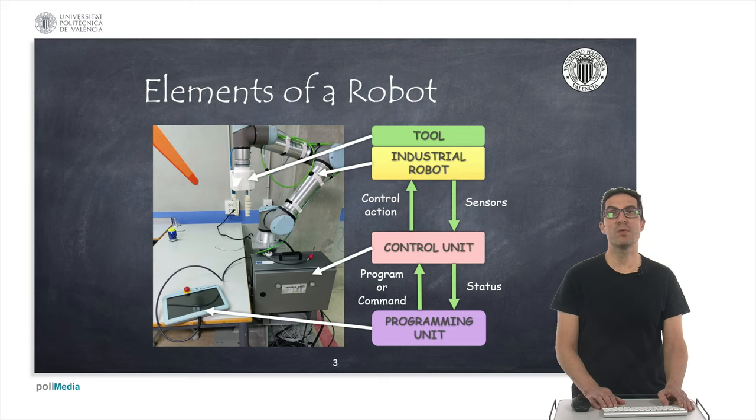The main elements of an industrial robot are, on the one hand, the programming unit that is governed by the operator, which is responsible for generating the programs or commands needed by the control unit. This unit is responsible for generating the control actions to control the motors of the industrial robot arm. This robot might include a tool that allows the robot to interact with the environment. The robot also includes sensors, mainly position, speed and torque sensors for each of its joints and possibly the tool. The control unit reports the status of the robot to the programming unit back to the user.